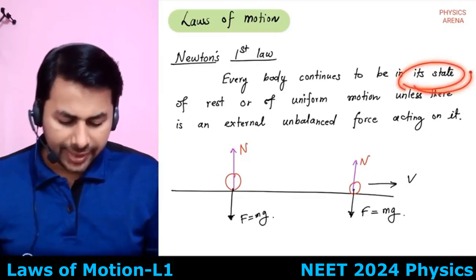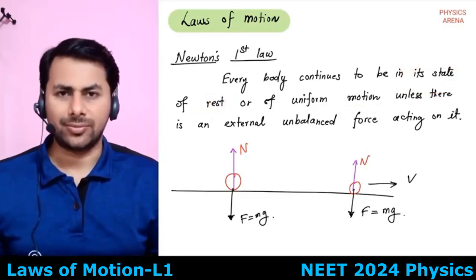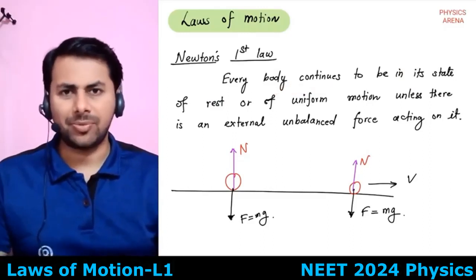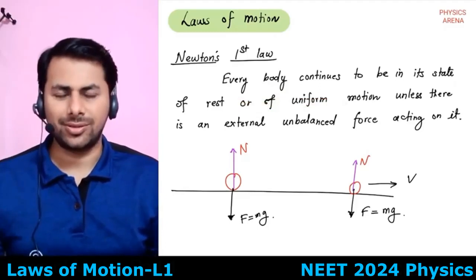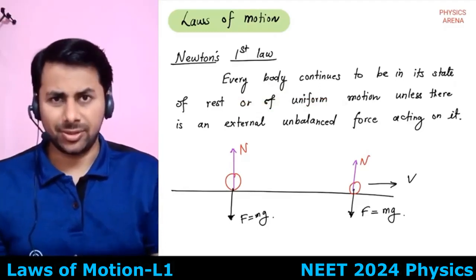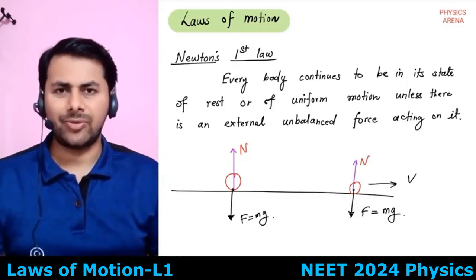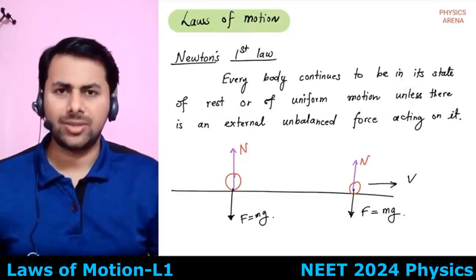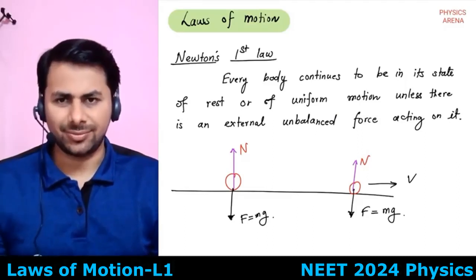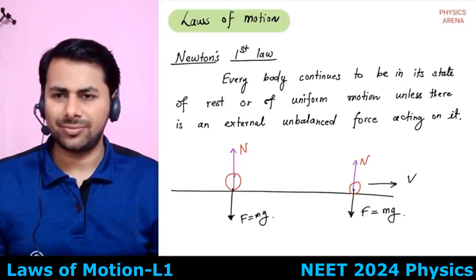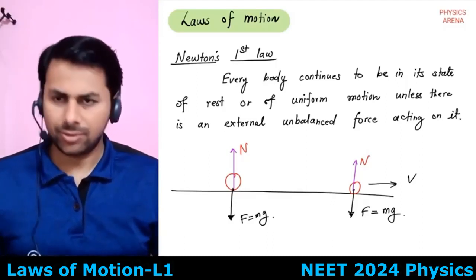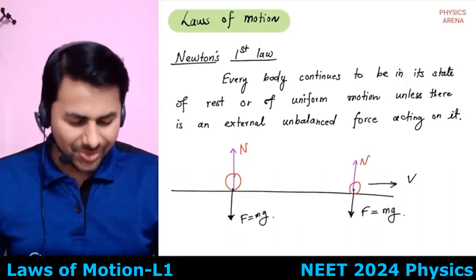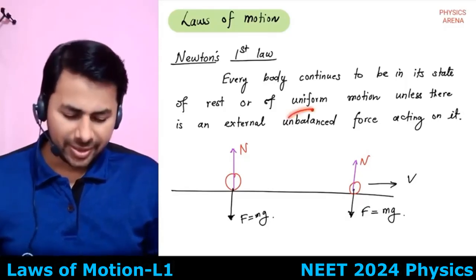If a force acts on the body, it will change its state of rest or of uniform motion. Bodies tend to remain in their state of rest or uniform motion unless there is an unbalanced force. An unbalanced force will change the state of rest or uniform motion — that means it will cause acceleration. We know Newton's second law: force equals mass times acceleration. The hint of that equation is already present in the first law itself.